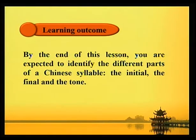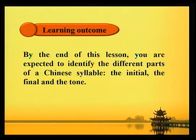Learning Outcome: By the end of this lesson, you are expected to identify the different parts of a Chinese syllable — the initial, the final, and the tone.